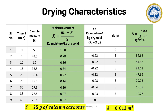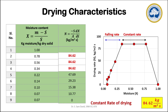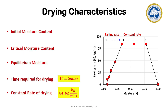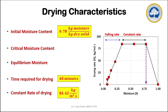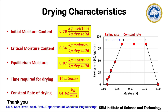Once the drying rate is calculated for all time intervals, we plot moisture content versus drying rate. From the graph, we can see that initially the drying rate increases, then remains approximately constant, and at a particular point it starts declining. The range of moisture for which the rate is constant is the constant drying rate period, and where it declines is the falling drying rate period. By drawing a perpendicular from the constant drying rate region to the x-axis, we find the initial moisture content of 0.78 kg moisture per kg dry solid. Drawing a perpendicular from the point where the rate starts decreasing gives the critical moisture content, and where the curve intersects the x-axis is the equilibrium moisture content. Thus, we conducted a drying experiment and identified the drying characteristics including initial moisture content, critical moisture content, equilibrium moisture content, and the time required for drying.